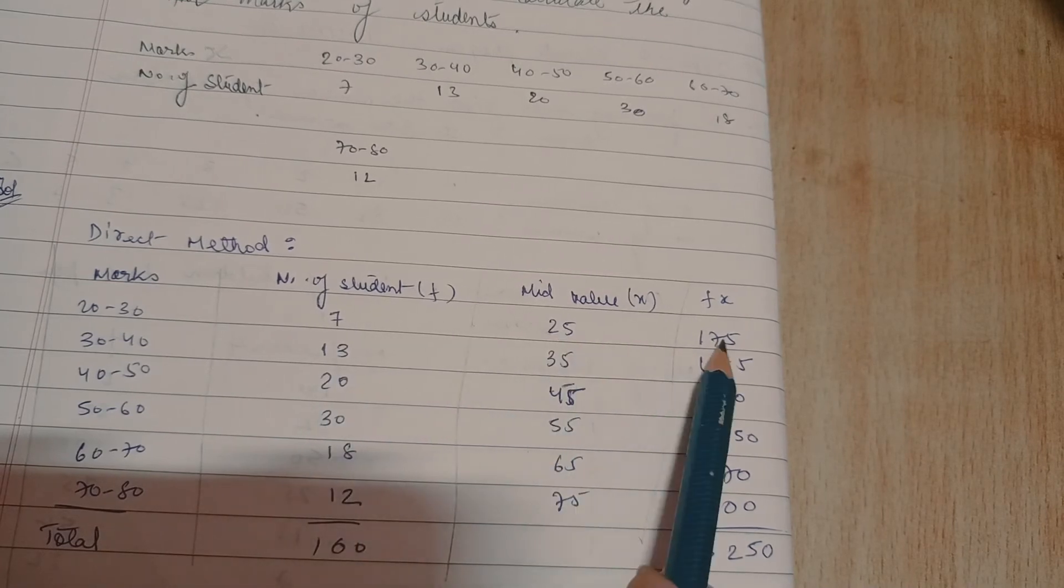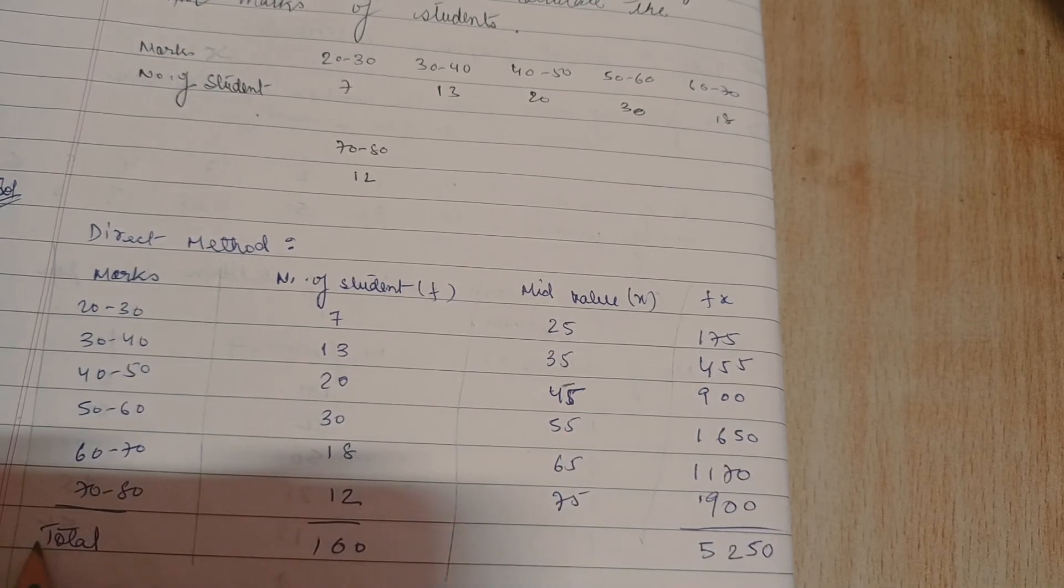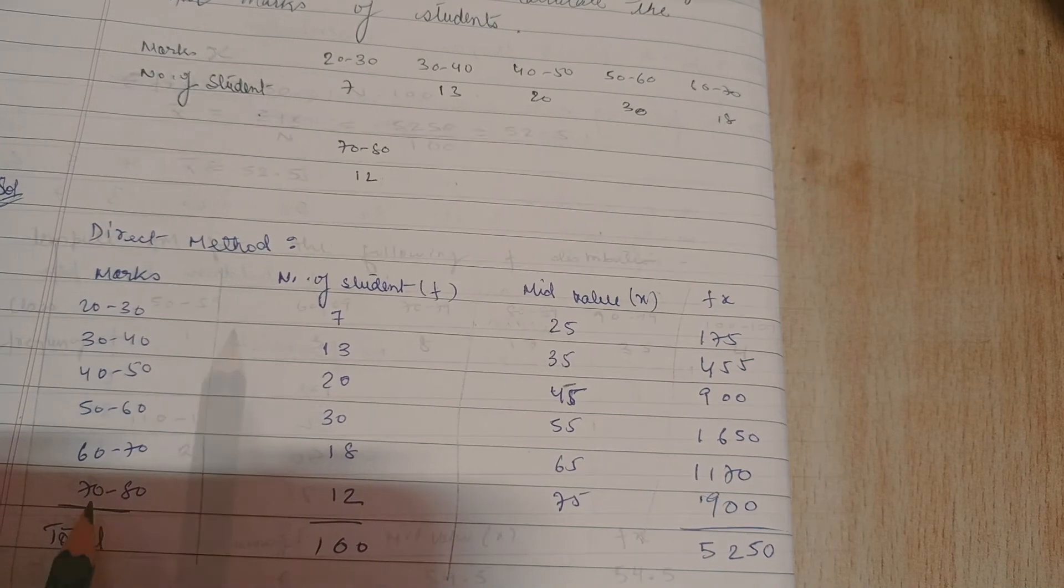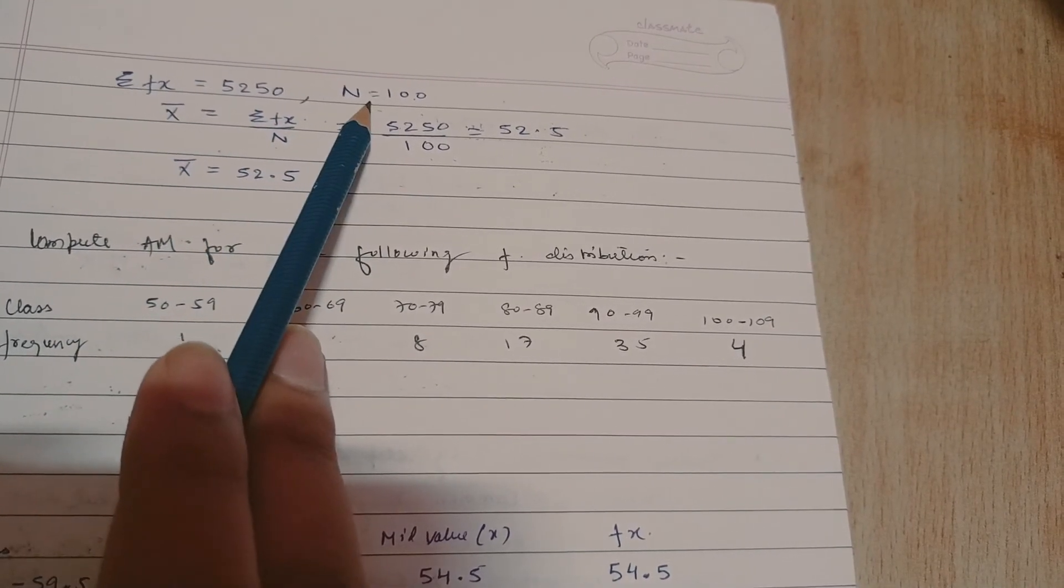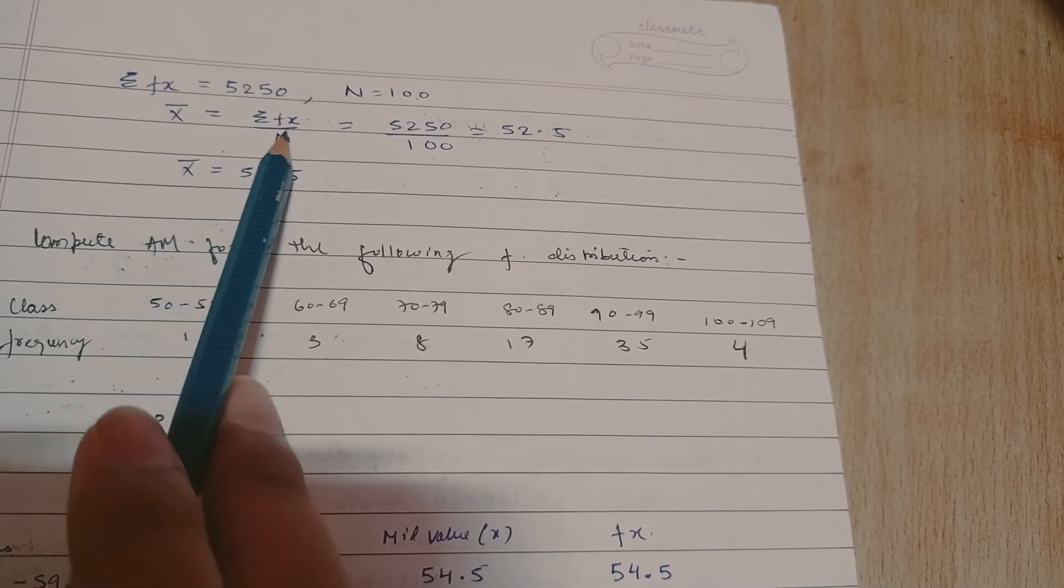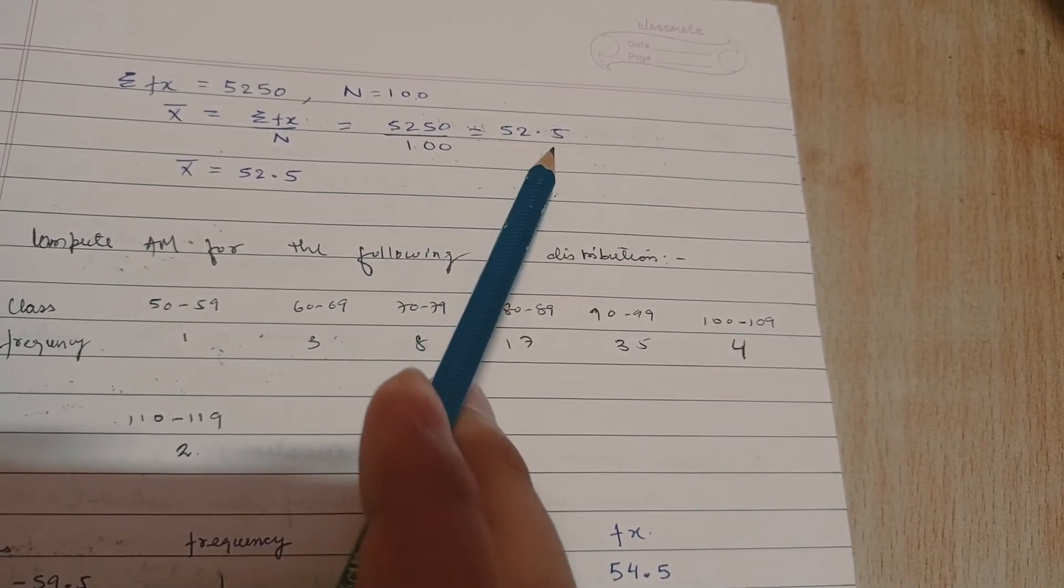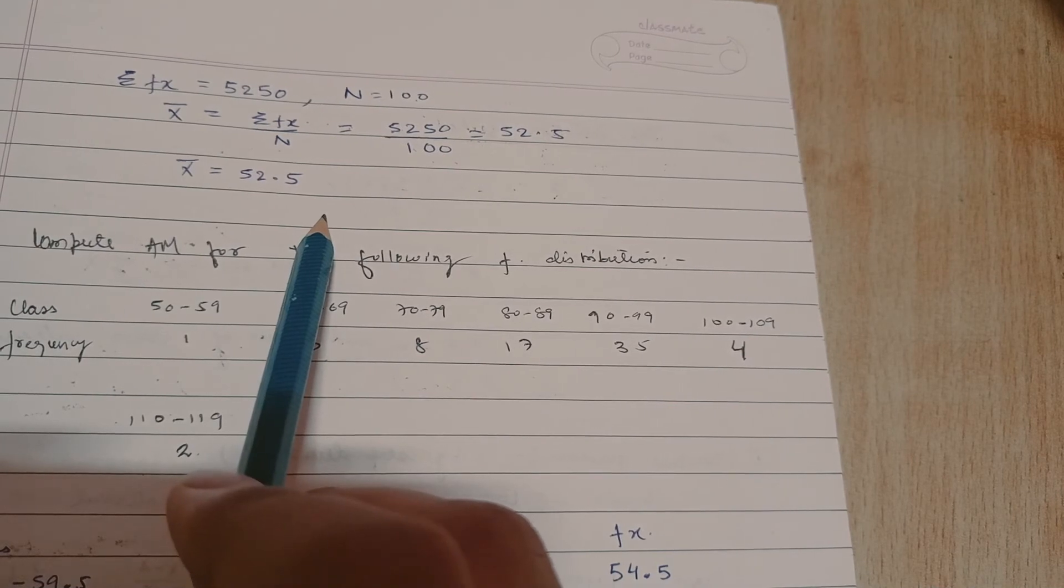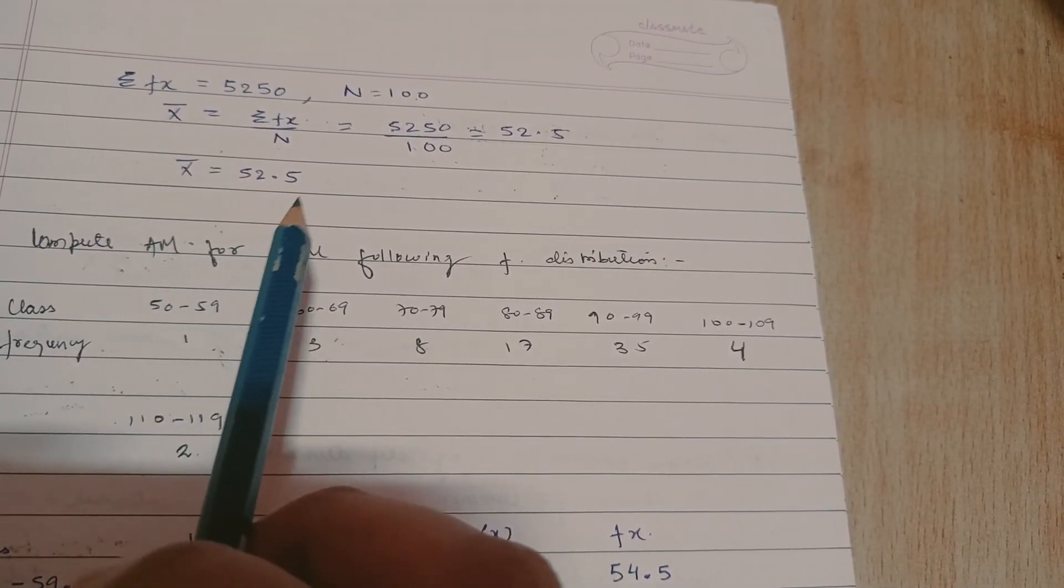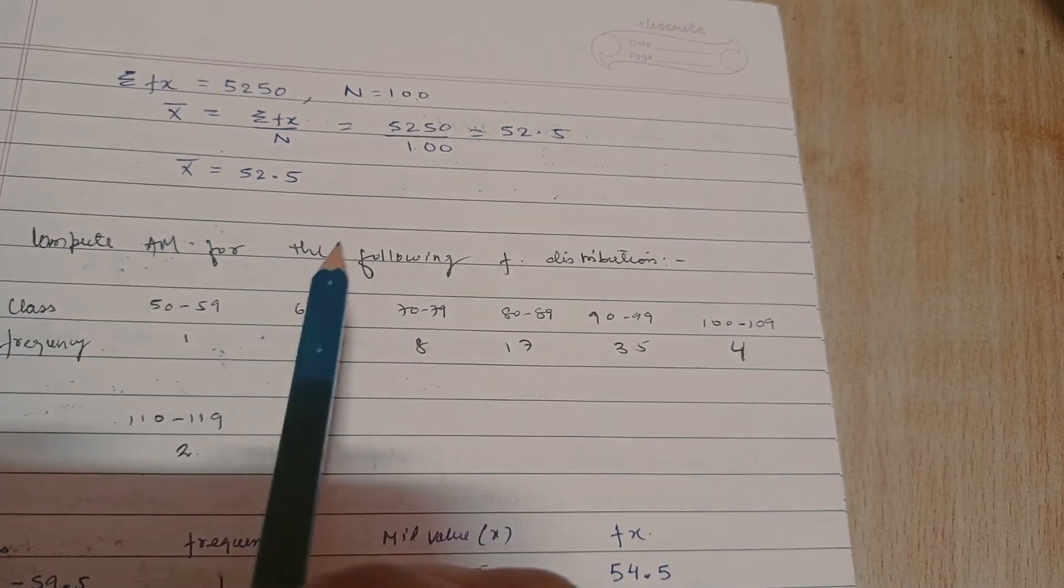Now multiply f and x, fx. 7 into 25 is 175, 13 into 35 is 455, 20 into 45 is 900 like that. And the last row is total. So total is 100 for frequency and total for fx is 5250. Now sigma fx is 5250 and total frequency n is 100. So arithmetic mean is given by sigma fx divided by n, that would be 52.5. At last write a statement: the average marks scored by the students is 52.5.